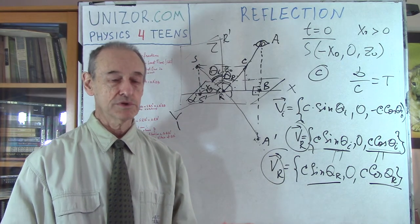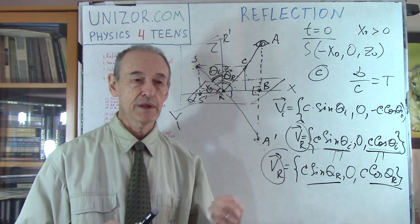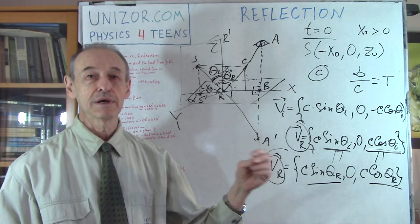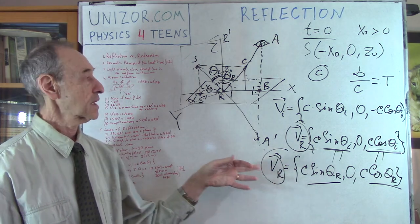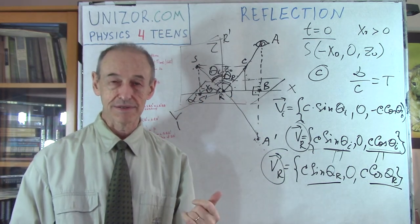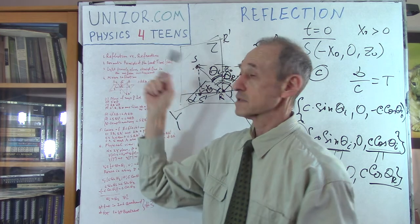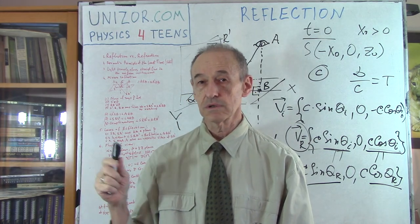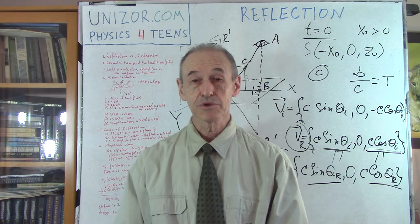Everything discussed today is an explanation of something we observe, and an attempt to give some logical foundation behind it — partly mathematical, from the position of minimizing the time of traveling, and partly a more physical explanation based on the corpuscular theory of light and elasticity of the reflection mechanism. I suggest you read the notes for this lecture at unizor.com, in the Physics for Teens course under the waves section, where you will find the properties of light and reflection. That's it — thank you very much and good luck.